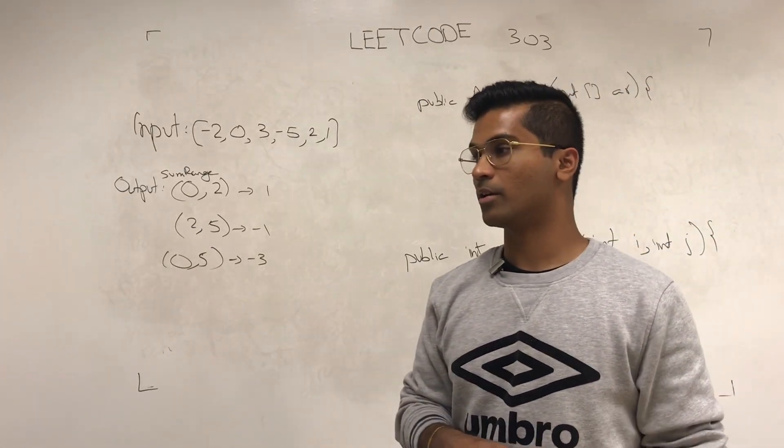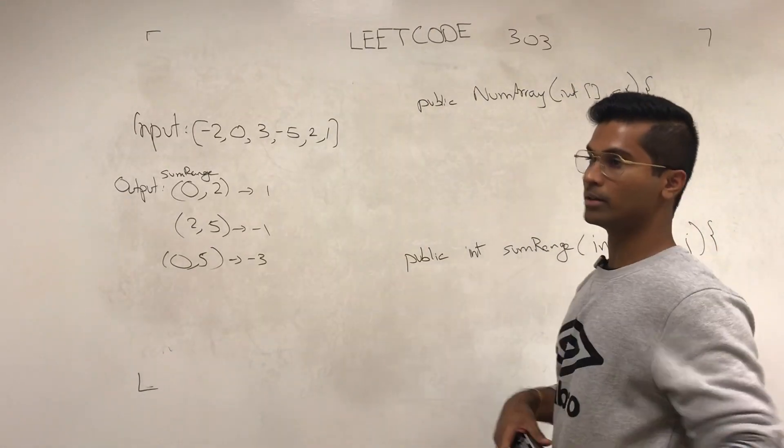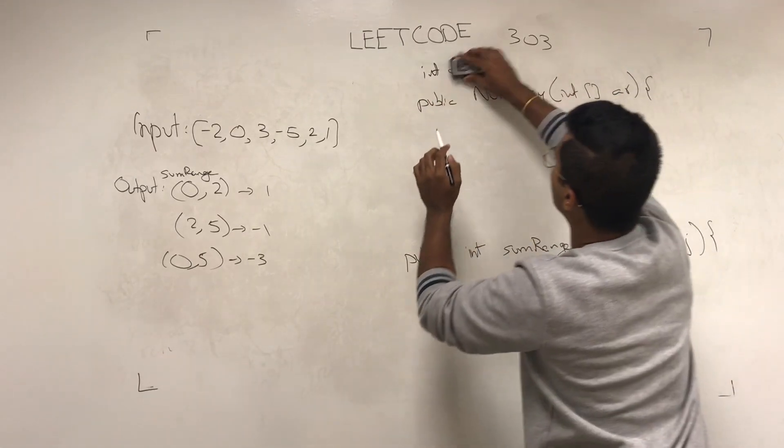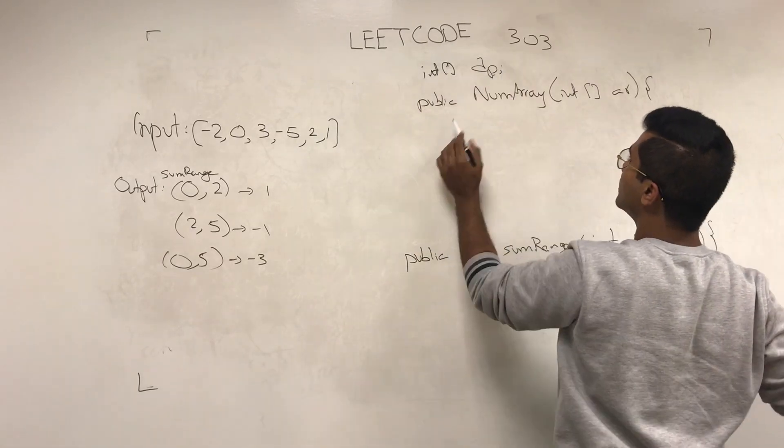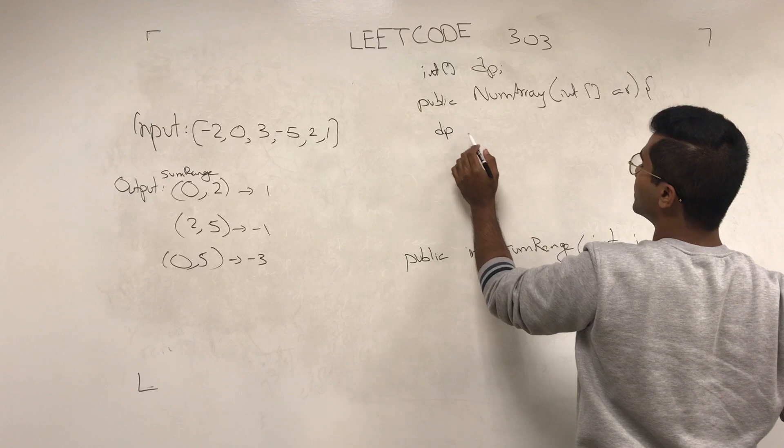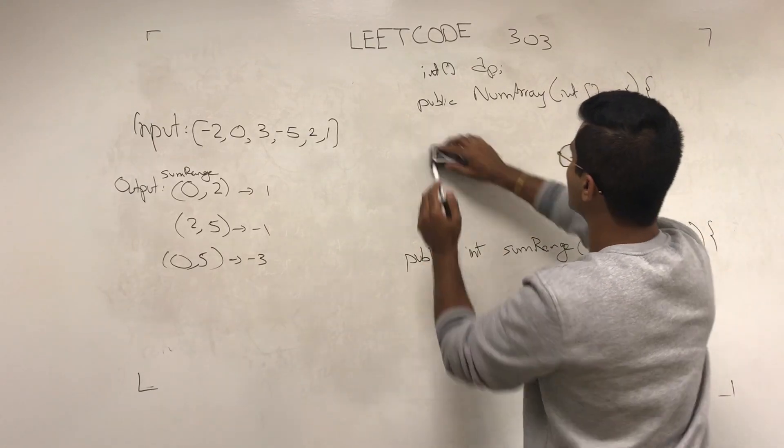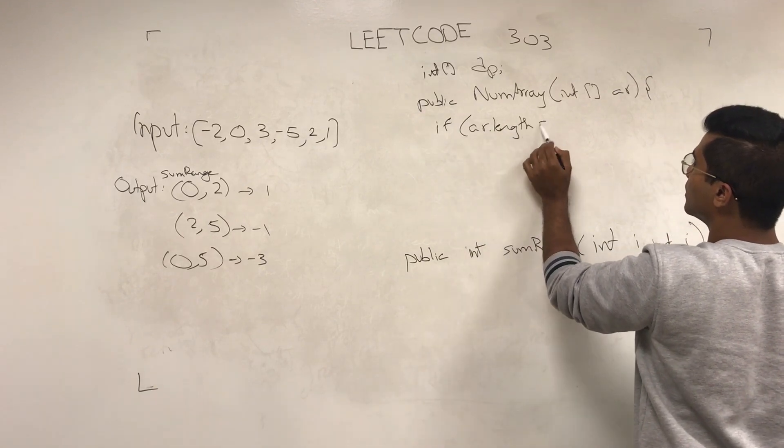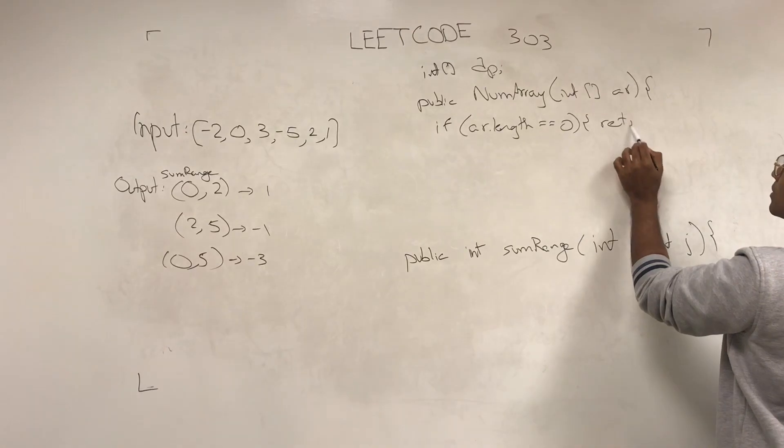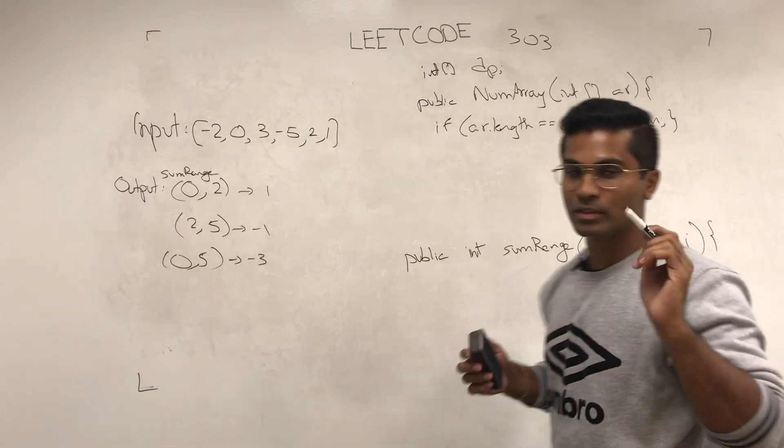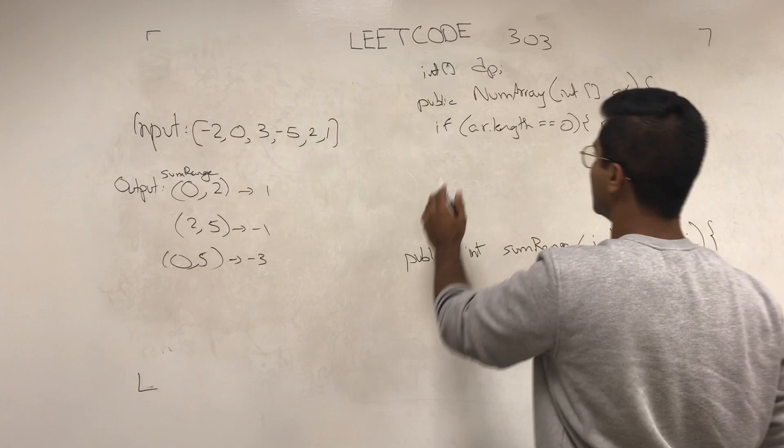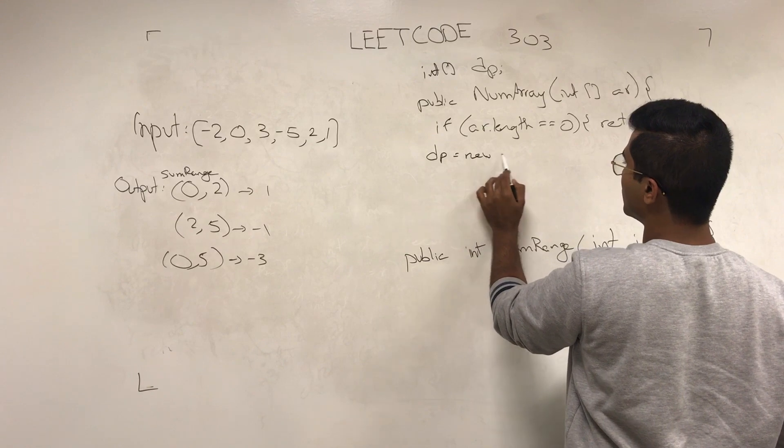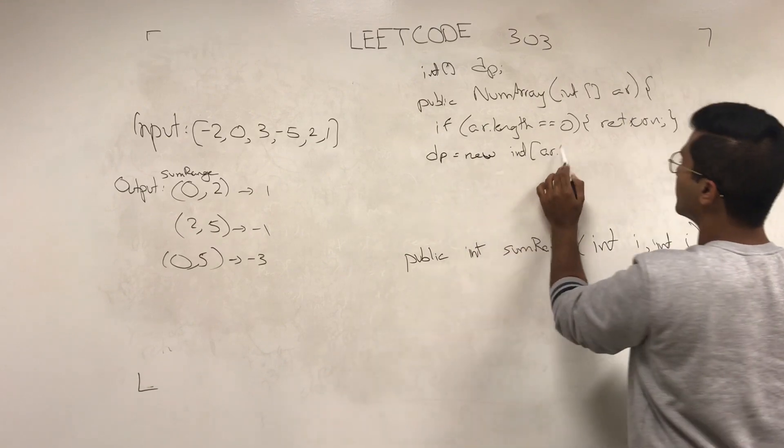I am going to use a DP array of the same size. First, if array length is zero, we can return. Otherwise, DP is set to new int array of length AR.length.